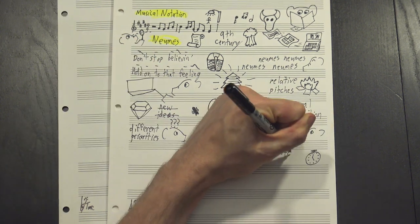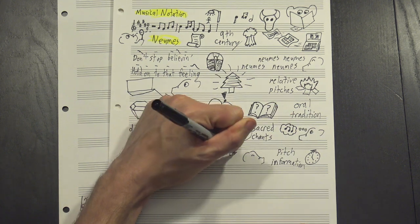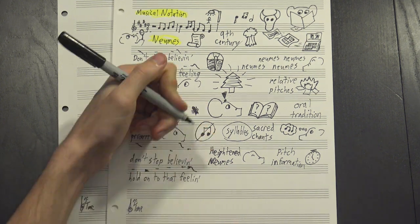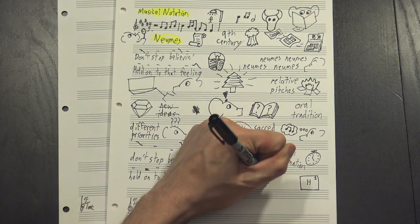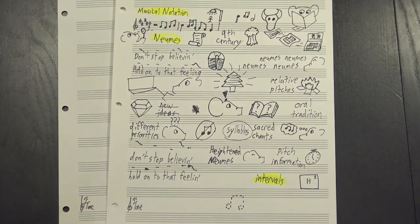Over time, though, it became clear that encoding some pitch information would probably be beneficial, which led to the invention of heightened neumes. Here you do the same thing, but you position the symbols to show the relative starting notes. This is still very basic, and it doesn't give you exact intervals or anything, but we're beginning to see the echoes of real notation.